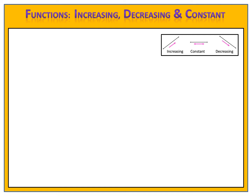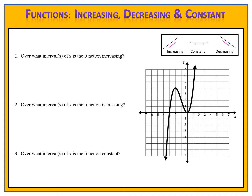Let's end today's lesson with an example for you to try. Here is the graph of a function. We want to find the intervals where the function is increasing, decreasing, and constant. Please pause the video here and come back when you're ready to compare answers. In this graph, we begin by increasing, then decreasing, and then increasing again. We notice that there are arrows on the ends of the graph, which means we have to add our negative infinity and positive infinity to the x-axis.